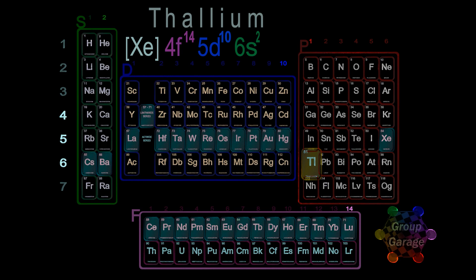Finally, as we move along in the p-block, we see there's one element, thallium. We write the period number 6, followed by the number of electrons in the p-shell, p1.